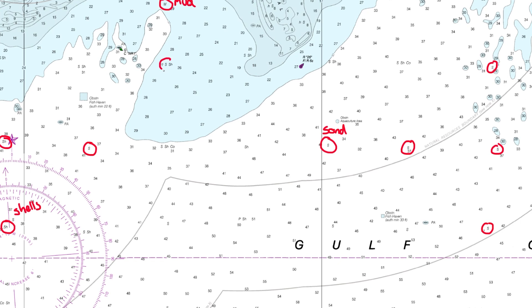If you look in here you can see that we've got a mixture of sand and shells. When you've got them together it just means that there are two different things making up the nature of the seabed there. Look, we've got more sand and shells, more sand and shells.